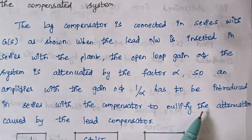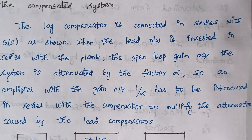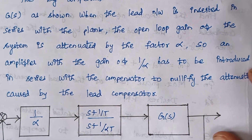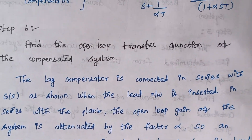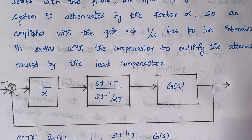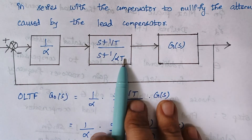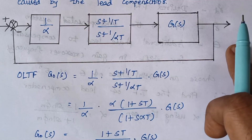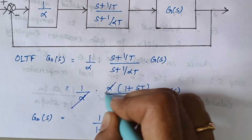The gain of 1/alpha is included in series with the compensator to nullify the attenuation caused by the lead compensator. Compensators are always connected in series, and this is an attenuation factor. We are having three blocks in series, so we multiply them to combine. The final open loop transfer function of the compensated system results from this multiplication, and the alpha and 1/alpha cancel each other.